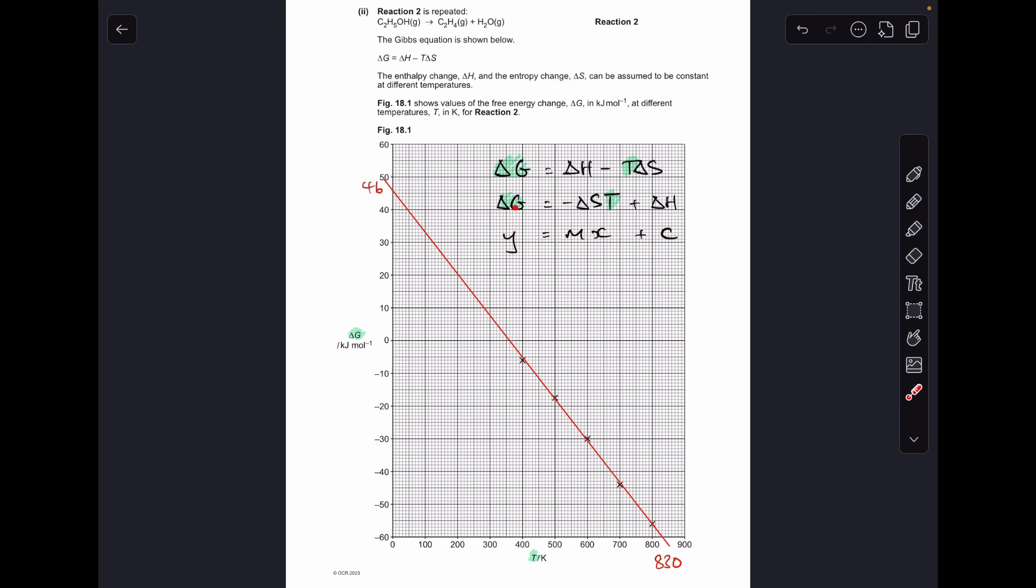So obviously we've got Y there, delta G is Y, T is X. So the M term, remember that's the gradient, is going to be minus delta S and the Y intercept C is the delta H.